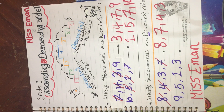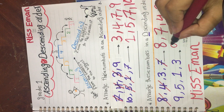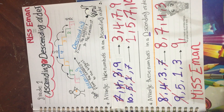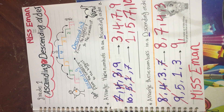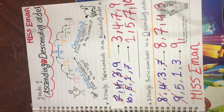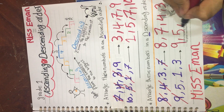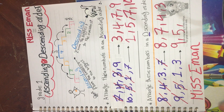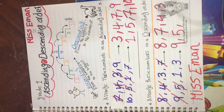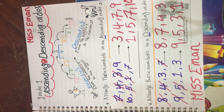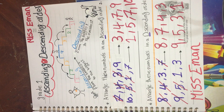Now I have nine, five, one, and three. Where is the biggest number? Yes, it's nine. We cancel it. Now from five, one, and three — the biggest is five. We cancel it. Now from one and three — the biggest is three. So the descending order is: nine, five, three, one. And we finished our lesson today. Assalamualaikum.